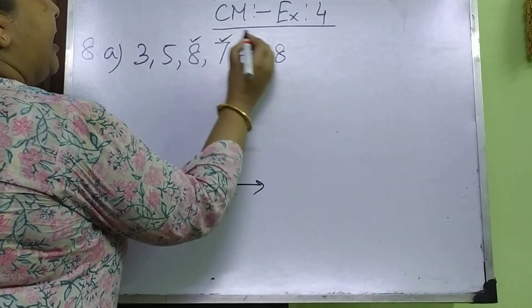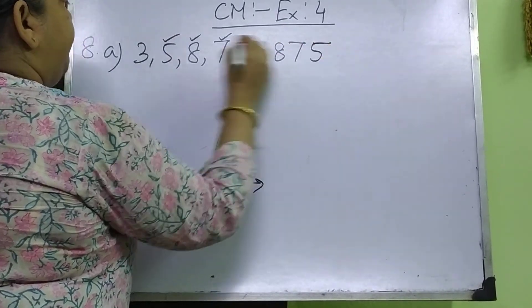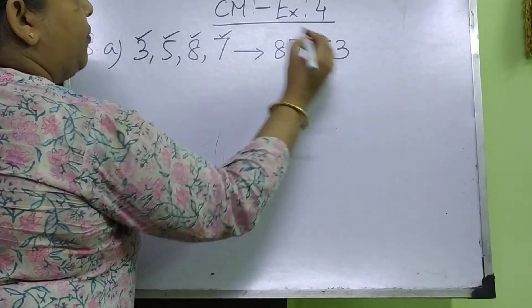Then second largest that is 7. Then third largest 5. Then last digit or smallest digit 3.